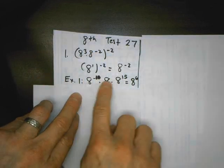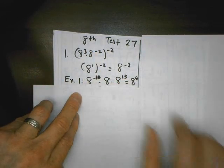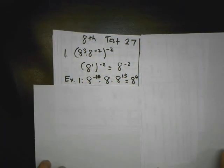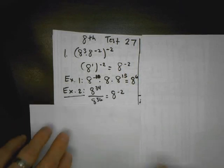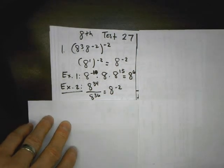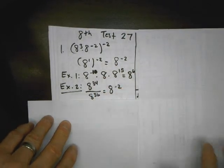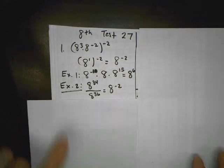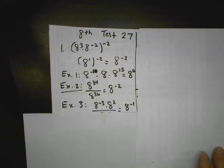When I simplify expression 1, just like we did inside here, we add all these up. Don't forget there's a 1 there. So I get 8 to the 6. That's not the same. Expression 2, when I'm dividing powers at the same base, the shortcut is to copy the base, subtract the exponents. So 34 take away 36 is negative 2. That's the same. So example 2 is part of my answer.